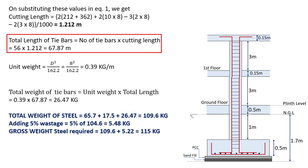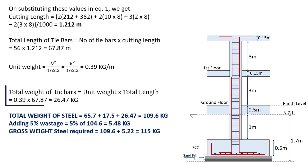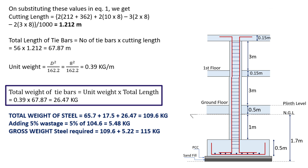The total length of tie bars equals number of ties × cutting length — 56 × 1.212 = 67.87 m. Unit weight equals D² / 162.2 where D is 8 mm, giving 0.39 kg per meter. Total weight of tie bars equals 0.39 × 67.87 = 26.47 kg.